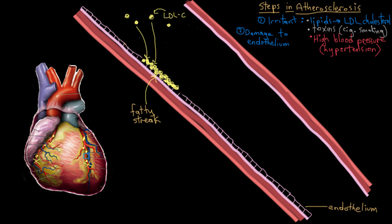One thing that happens to the cholesterol when it gets inside the wall of the blood vessel is that it starts to get oxidized — it changes a little bit. When it gets oxidized, that sends a signal to the immune system. That signal brings around immune cells called monocytes — almost like police. Here's a monocyte, drawn in white to remind you it's a white blood cell. This monocyte doesn't like that cholesterol is collecting in the vessel walls, so it chases in after the cholesterol to try to break up the party.